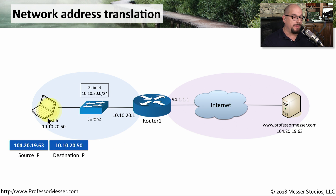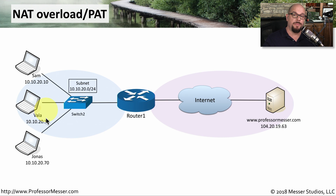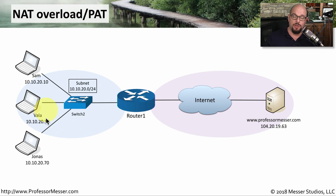If our network had only a single device, this basic NAT would work. But there may be hundreds or thousands of devices on the inside of our network. We handle this through a type of NAT called NAT overload. You might also hear this referred to as PAT, or port address translation. You might also hear it called source NAT, because we're performing network address translation on the source IP address.